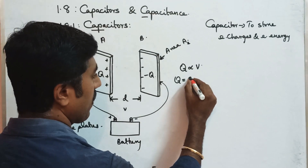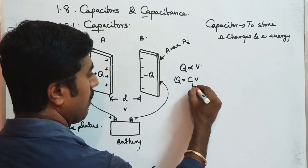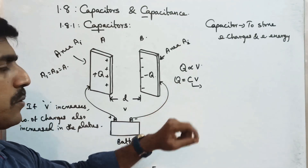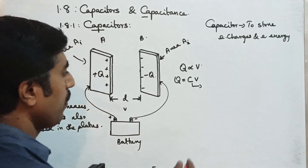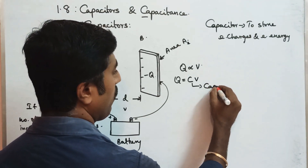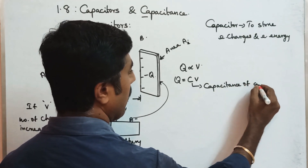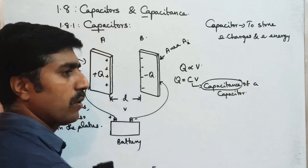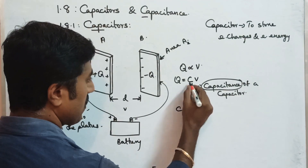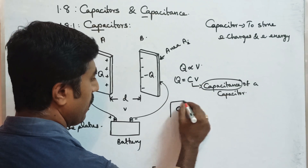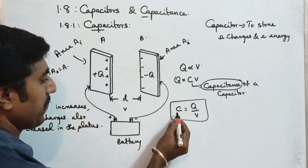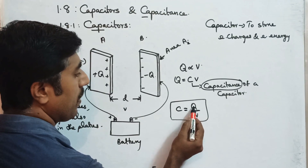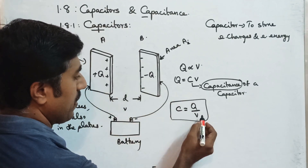So Q is directly proportional to V. Introducing a proportionality constant C, we get Q equals C times V. This constant C is called the capacitance of a capacitor. From this, capacitance C is equal to Q divided by V.